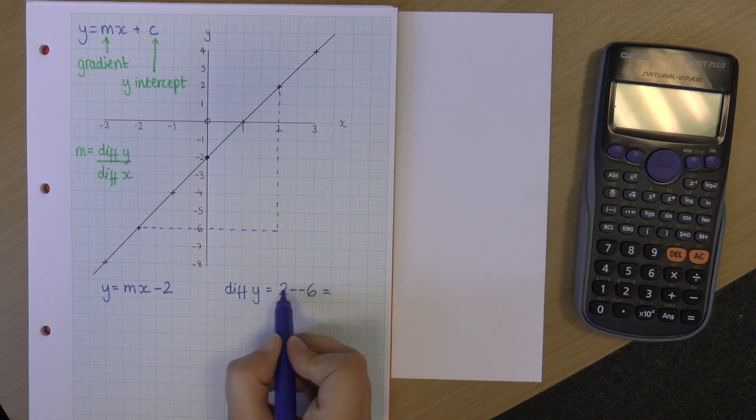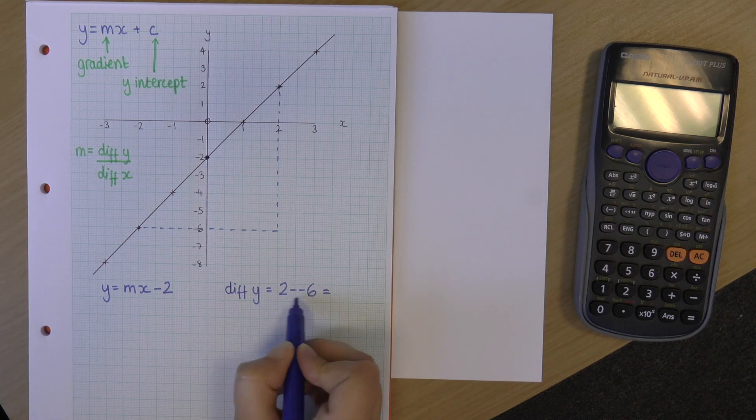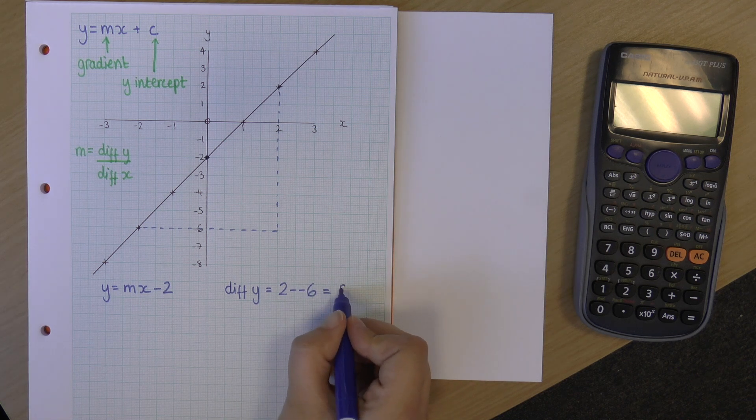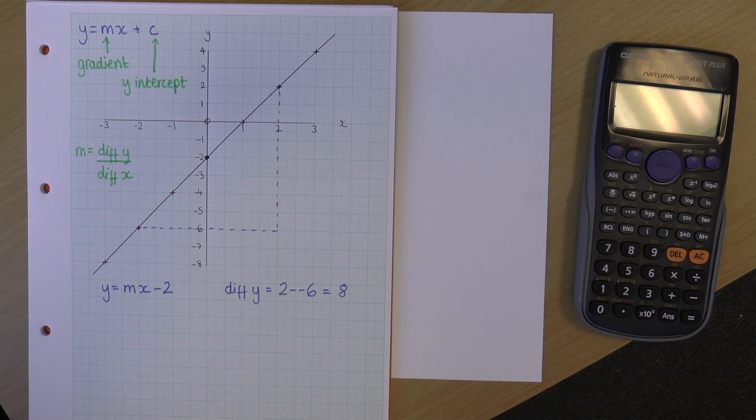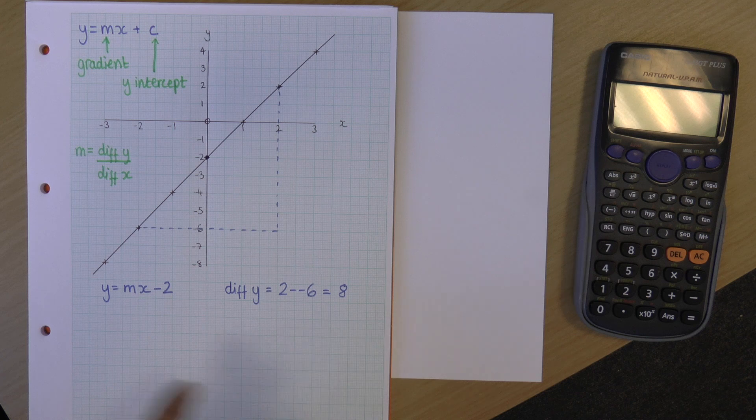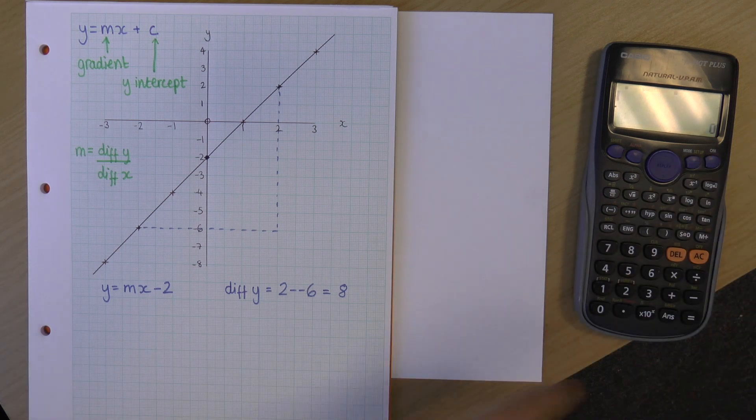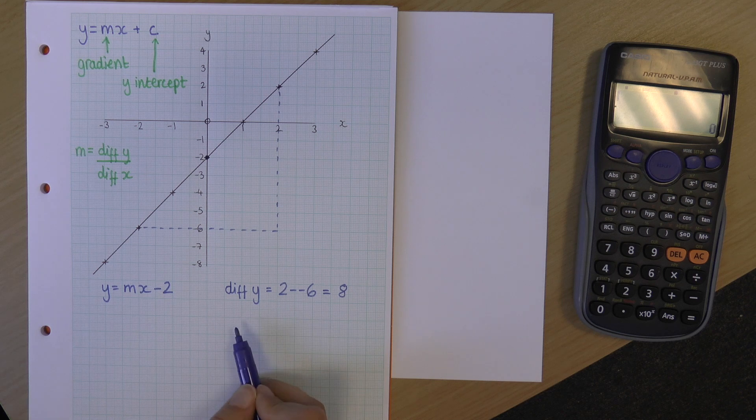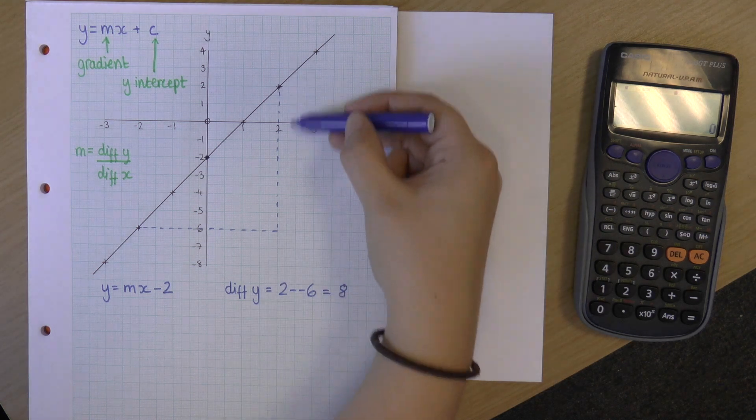And remember, when we've got these two negatives together, that becomes a plus. So, really, this is saying 2 plus 6, which is 8. Now, I can do that either in my head or on my calculator. So, if I wanted to do it on my calculator, I could. Okay, so that's the difference in y. That's this side of the triangle.